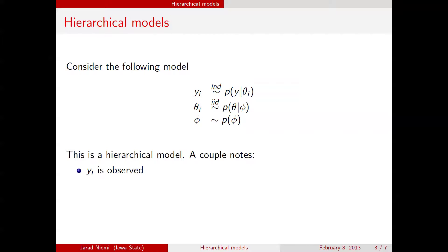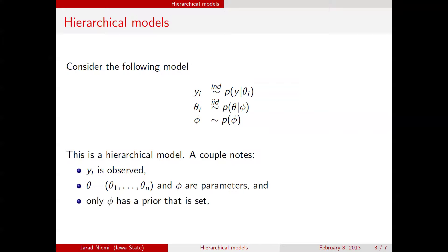A couple of notes: y_i is the only thing that's known — those are your observations. Theta_i (or vector theta) and phi are the parameters — the unknowns in the model. Note that there are actually more parameters in this model than there are observations: there's one observation for every theta_i, and in addition to theta_i there's the parameter phi. Also note that the prior being set for the entire analysis is the prior on phi — the prior on theta will change depending on what values phi takes over the course of the analysis.